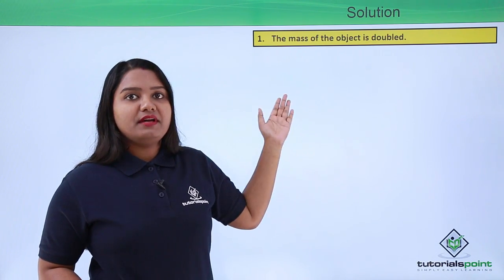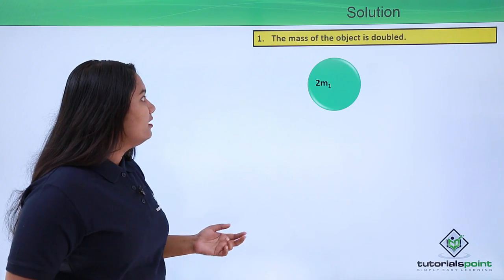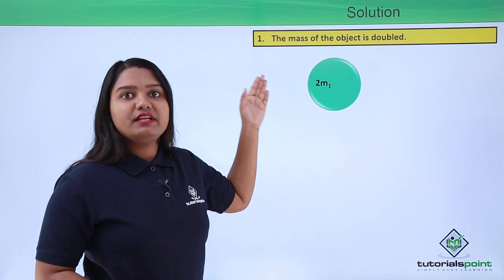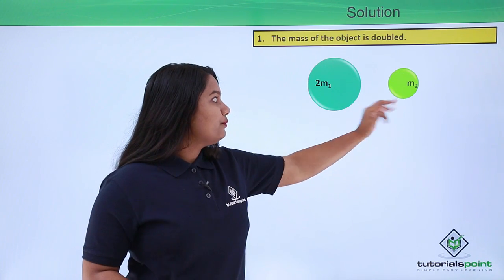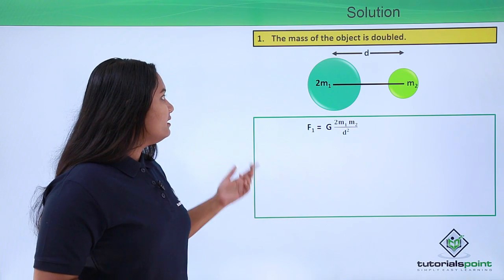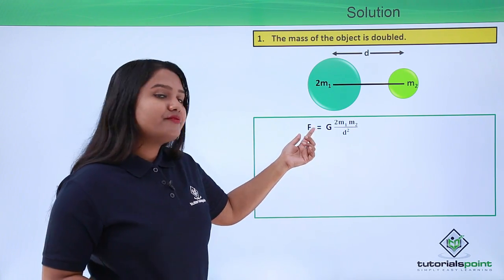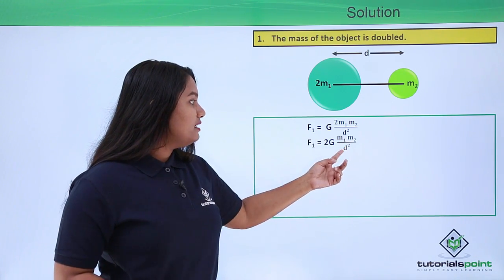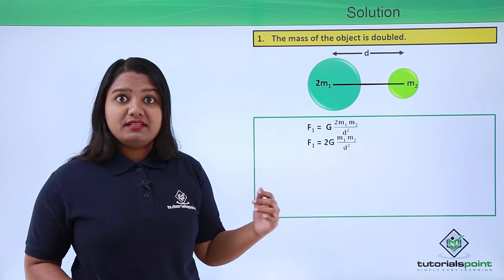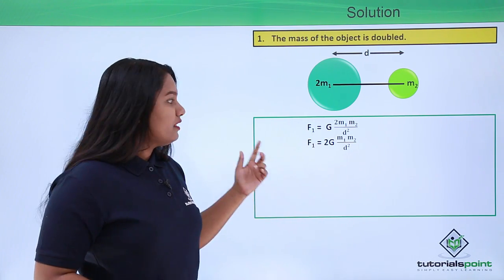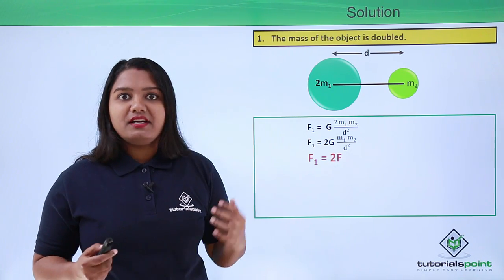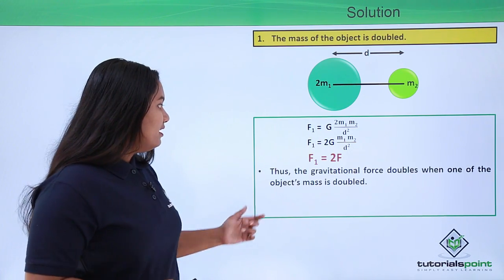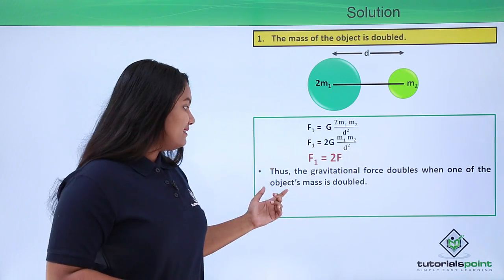If the mass of one object is doubled, what will happen to the force of gravitational attraction? Let's take the first mass to be doubled, so the mass becomes 2M1. It was M1 before; now it is 2M1. The second body is of mass M2 and the distance between them remains the same, d. The force F1 equals G into 2M1 M2 by d squared, which gives F1 equals 2 into G M1 M2 by d squared. Since G M1 M2 by d squared equals F, we get F1 equals 2F. So the force of attraction doubles when one of the masses is doubled.